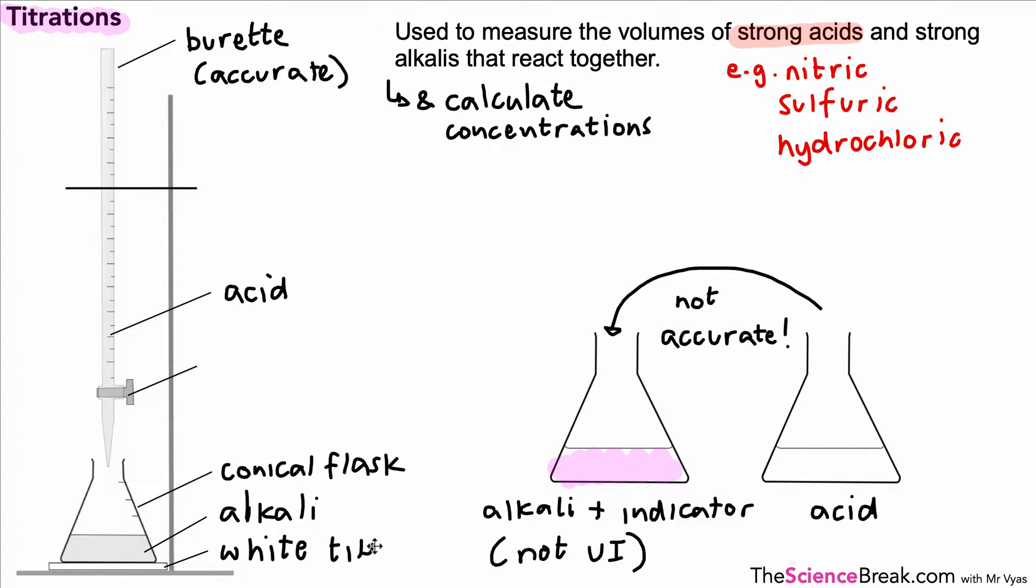At the bottom underneath the flask we have a white tile because this helps us to see color changes more easily. Finally, we've got a tap on the burette and this allows us to adjust the flow of acid into the flask.